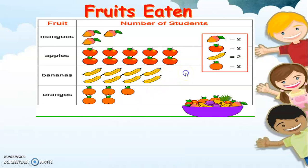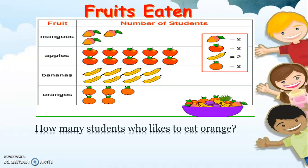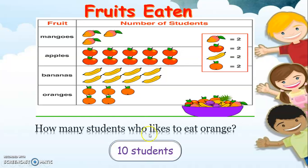How many students like to eat orange? We are looking at the orange row. There are five orange pictures, and each orange is equal to two. Counting: two, four, six, eight, ten. There are ten students who like to eat orange.